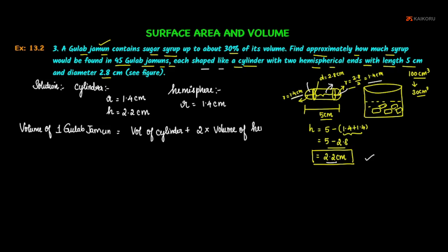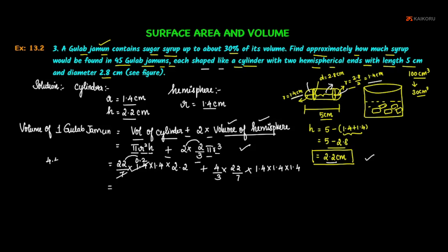That equals pi r squared h plus 2 into 2 by 3 pi r cubed. Substituting the values: pi value is 22 by 7, radius of cylinder is 1.4, so 1.4 into 1.4 into height of cylinder 2.2 cm, plus 2 into 4 by 3.